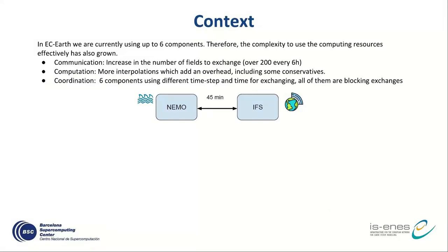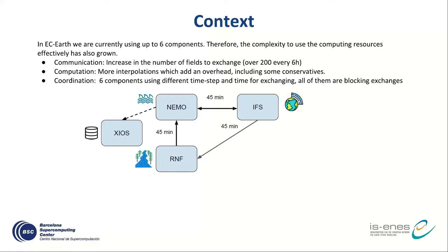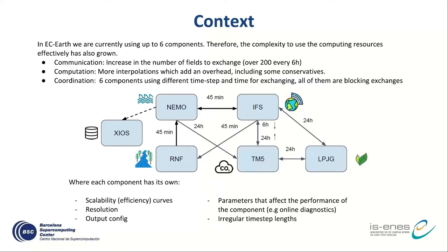To provide context, we give examples about the new metrics we are proposing. The particular model here is NEMO-IFS, also including XIOS for NEMO output and a coupler, and we are moving to a new system model configuration with six components. We are now talking about six components exchanging over 200 fields every six hours, with required conservative interpolation, different resolutions, irregular time steps, and varying output configurations.